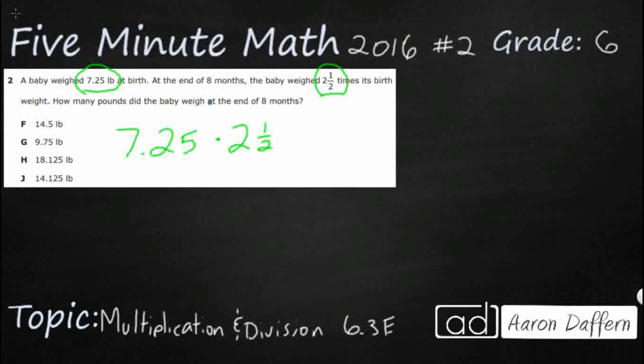One option would be, probably the easiest one would be to change this 2 and a half into a decimal. If you really want to, you can change both of these into improper fractions and multiply them straight across, but then you would have to move them back into decimals to find the answer. So let's look at just changing this 2 and a half. Well, the 2 is going to stay the same, and all we have is the one half.